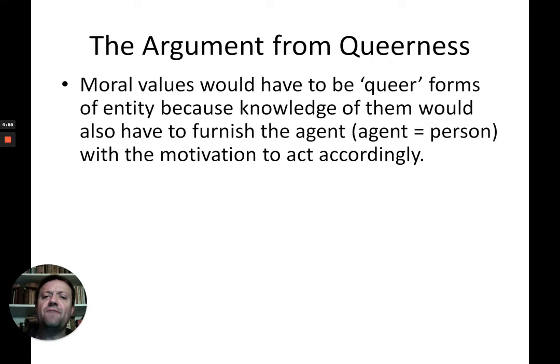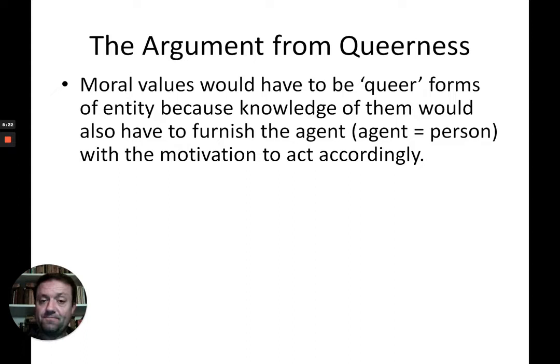Mackie suggests that moral values would have to be queer or strange forms of entity, because knowledge of them would also have to give the agent the motivation to act. A good way of putting this is to imagine that you have six beers in the fridge — that is just a fact. It only becomes relevant if you are thirsty or want a beer. The motivation for you to go and get a beer is subjective; there is nothing in the fact of there being six beers in the fridge itself that motivates you.